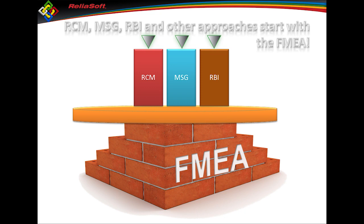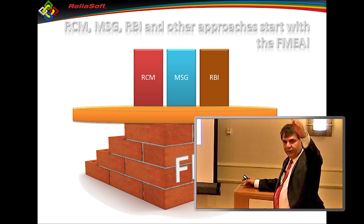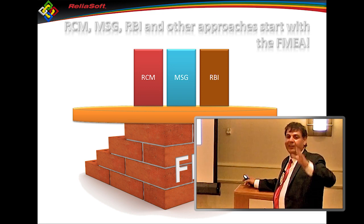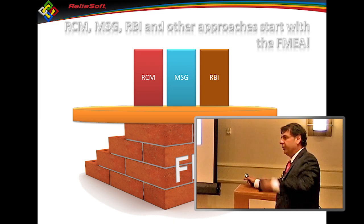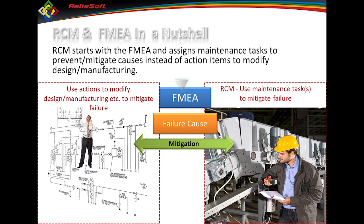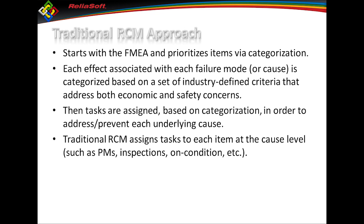The difference when you get into those methods really comes down to the categorization idea — how do I filter what's important. The aircraft industry filters one way, oil and gas another way, and traditional RCM yet another way. At the end of the day, I've got my failure modes and causes and I try to mitigate causes — that's my objective. I can mitigate them through design changes or through maintenance actions. In FMEA we use change point analysis or risk discovery to figure out which ones are important, and that idea actually comes from RCM — categorization is about figuring out which components are important enough to do further analysis on.